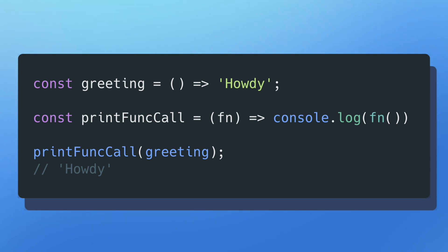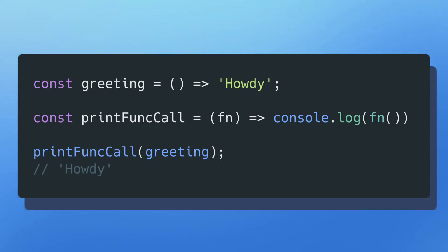Now that we have a working definition of higher order functions, let's take a look at a couple examples. Here I have a simple method called greeting that takes in no parameters and returns the string 'howdy'. Below that, I have another method called printFunctionCall, which takes in one argument called fn, and returns a console log that prints out the function call. When I execute printFunctionCall and pass in a reference to my greeting method, I'll see in my console that 'howdy' has been printed out. printFunctionCall is a higher order function since it takes in the function fn as an argument, and it has no clue what's inside the greeting method — all it's told to do is execute it.